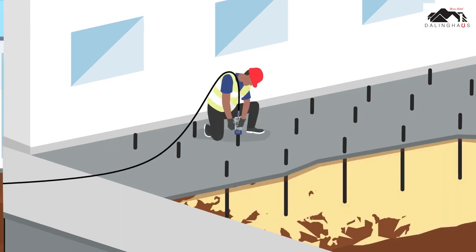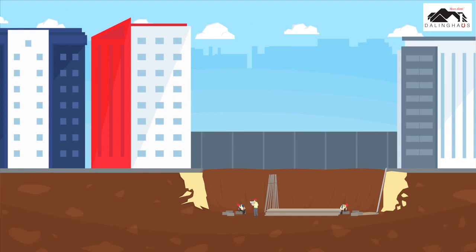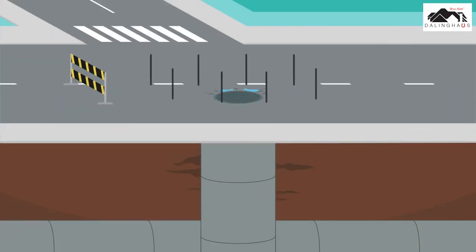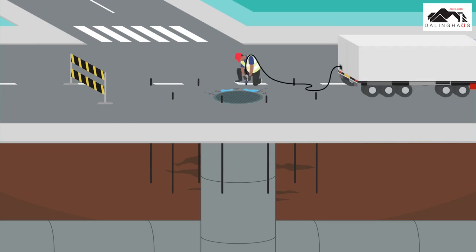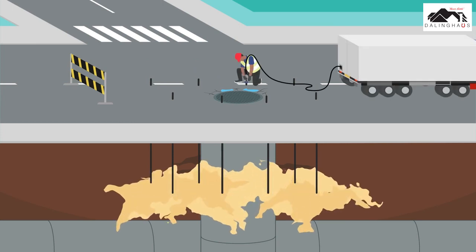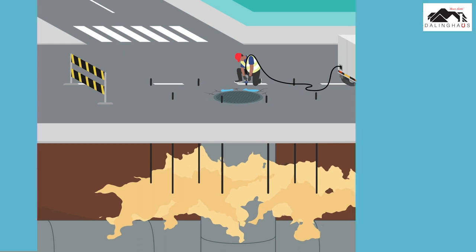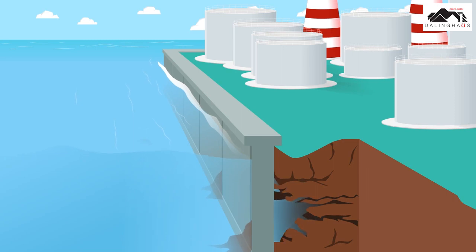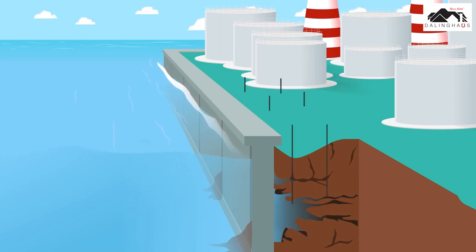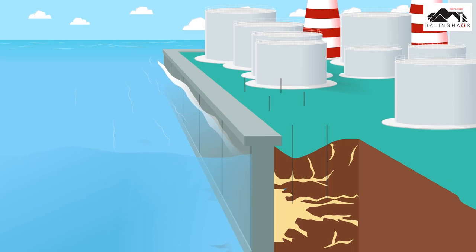Prior to excavation, the contractor drives pipes in a grid pattern and injects soil stabilization resins to protect the existing structures on each side. Unstable soil caused by infiltration into pipes and manholes is no match for Alchemy SpeedTech stabilization resins — this process prevents cave-ins and sinkholes and seals underground pipe leaks. To protect a seawall, a contractor can inject Alchemy SpeedTech soil stabilization resins to fill voids, displace water, and stabilize loose soil into a solid mass, relieving the pressure on the seawall.